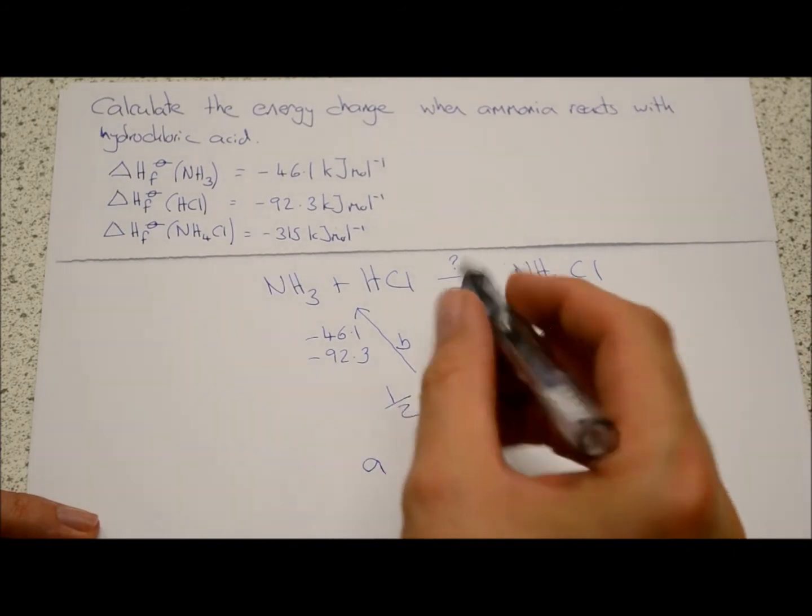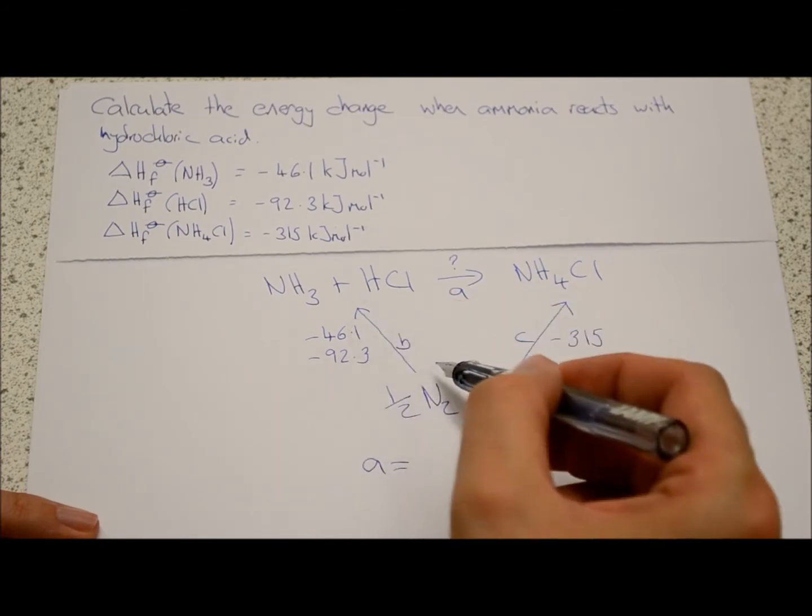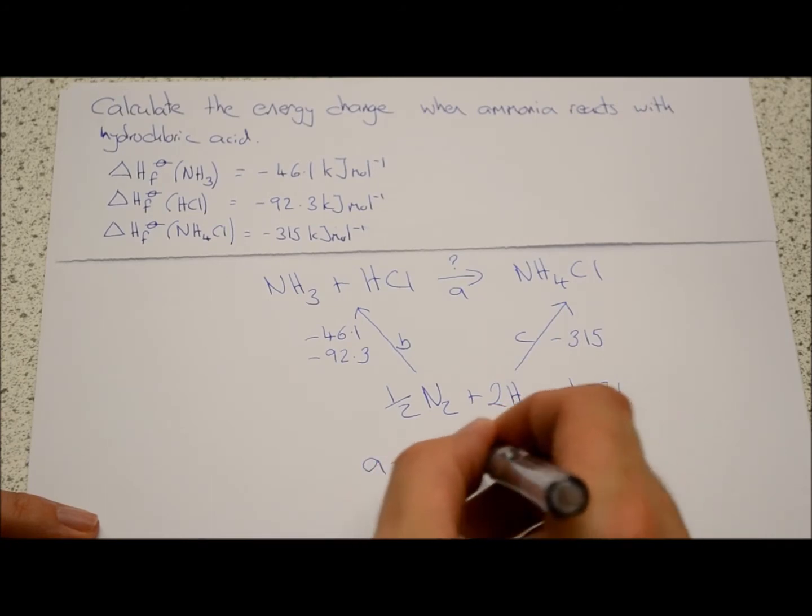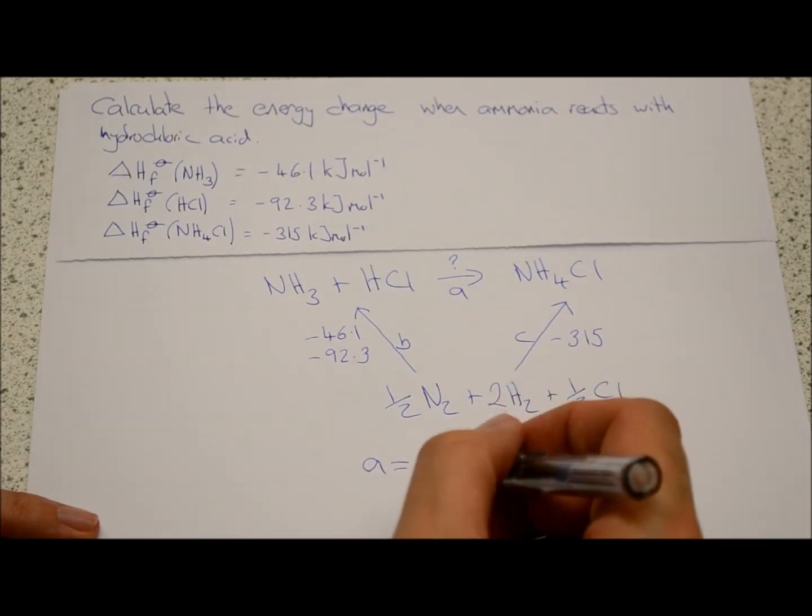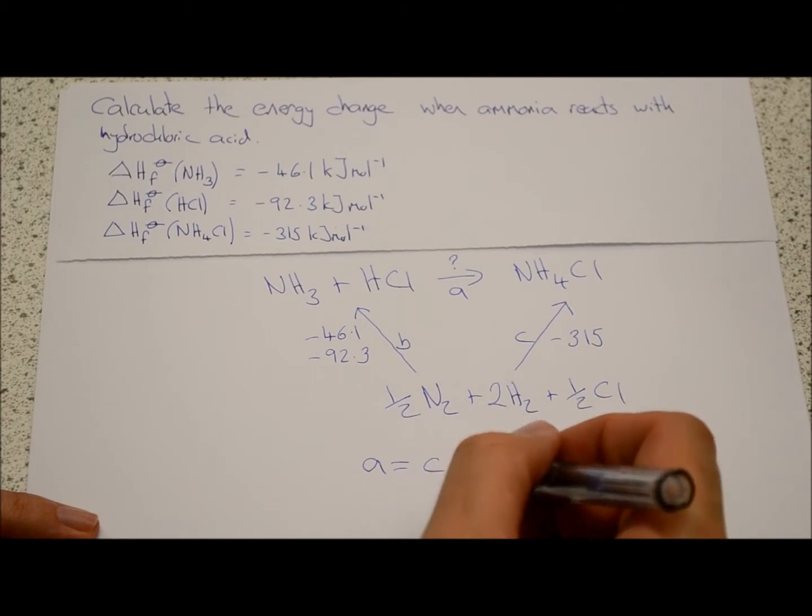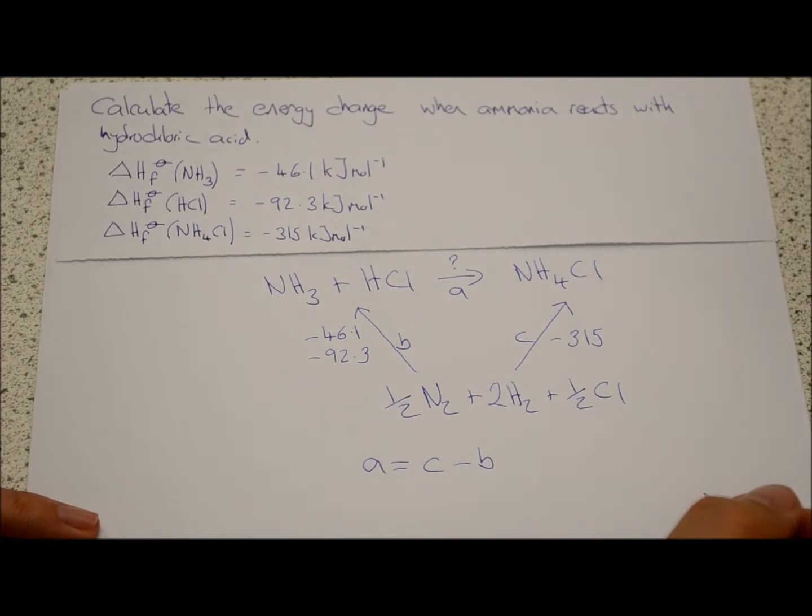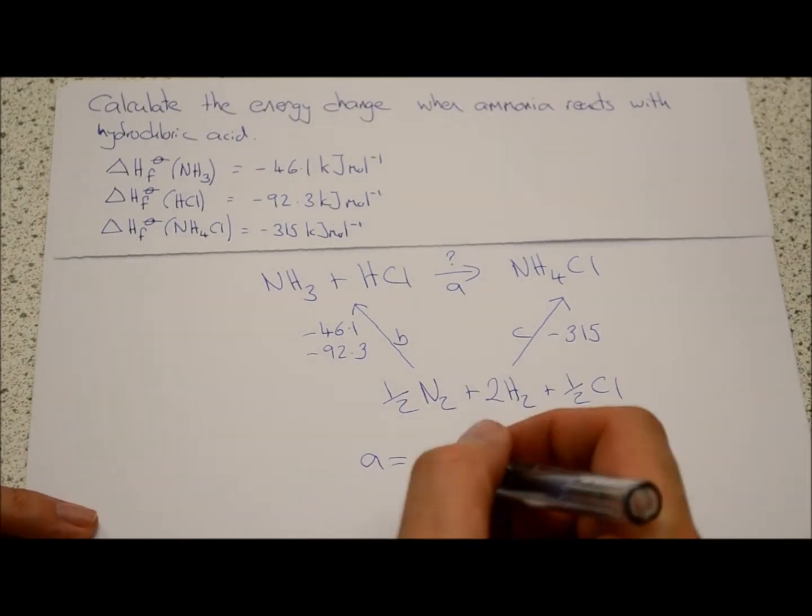And we're trying to find A, so A is equal to B if we're going the wrong way and C if we're going the right way. So it's equal to C minus B. It could also be minus B plus C, but for ease of purpose we'll just do it this way.